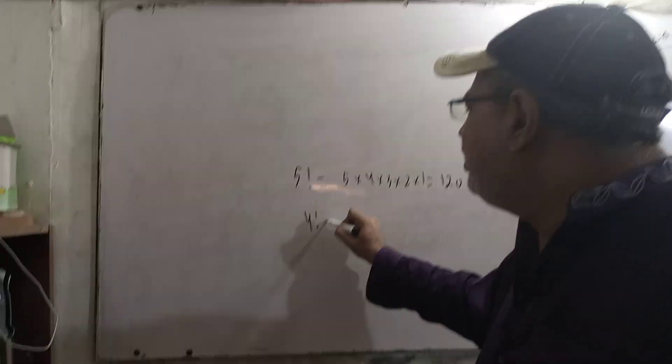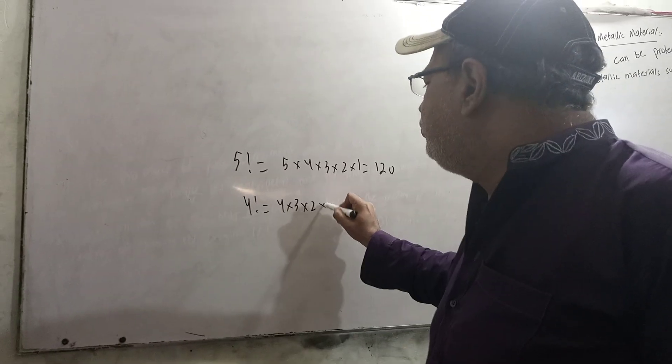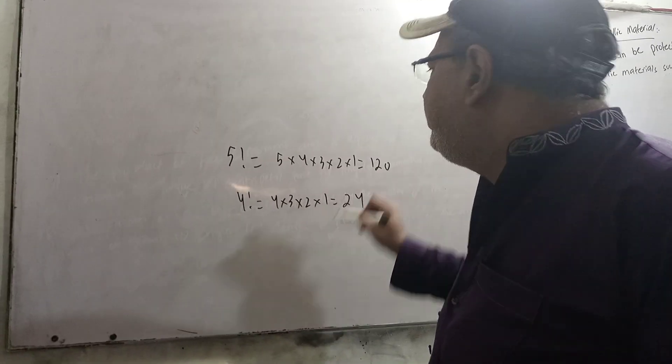Now, what is 4 factorial? 4×3×2×1. 24 will come.